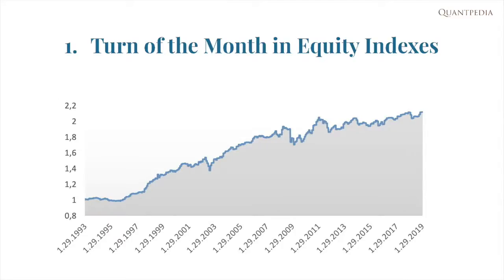The Turn of the Month is a well-known effect on the stock indexes, with a simple idea that stock prices usually increase during the last four days and the first three days of each month. It is due to the reinvestments of savings, dividends, and interest at month ends. We think that this strategy can be simplified even more by buying the SPY ETF on the close at the end of the month and selling it on the close of the first day in the following month. Such a simple strategy with an easy execution still works in the present, as our backtest shows.